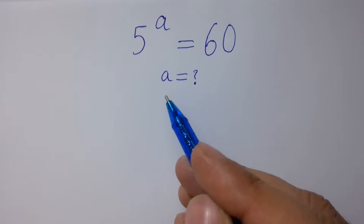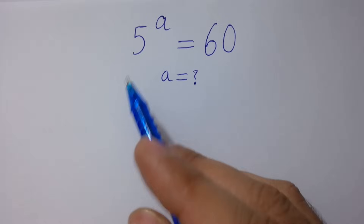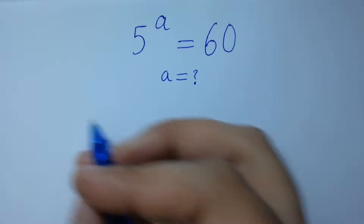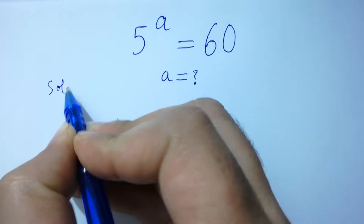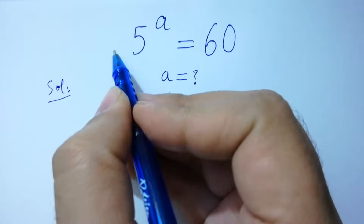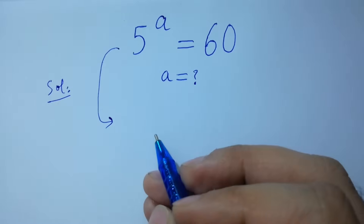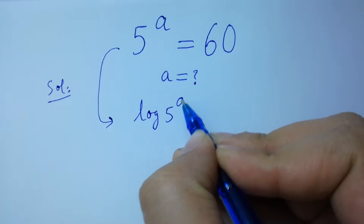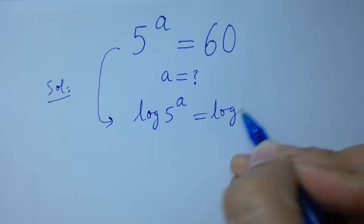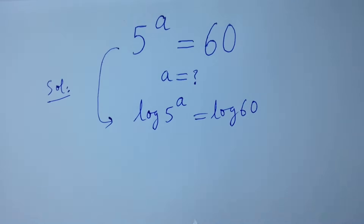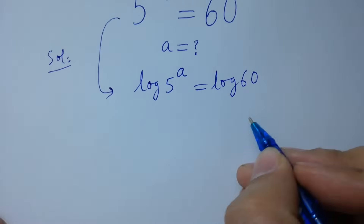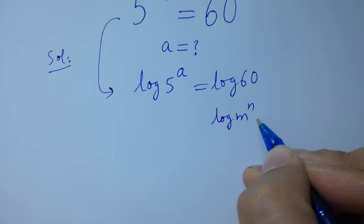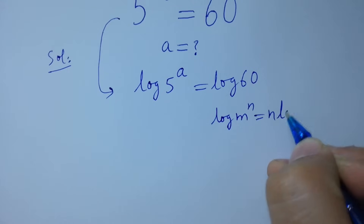Hello friends, find the value of a if 5 to the power a equals 60. Let's have a solution. Take log on both sides. As we know, log m to the power n equals n log m.